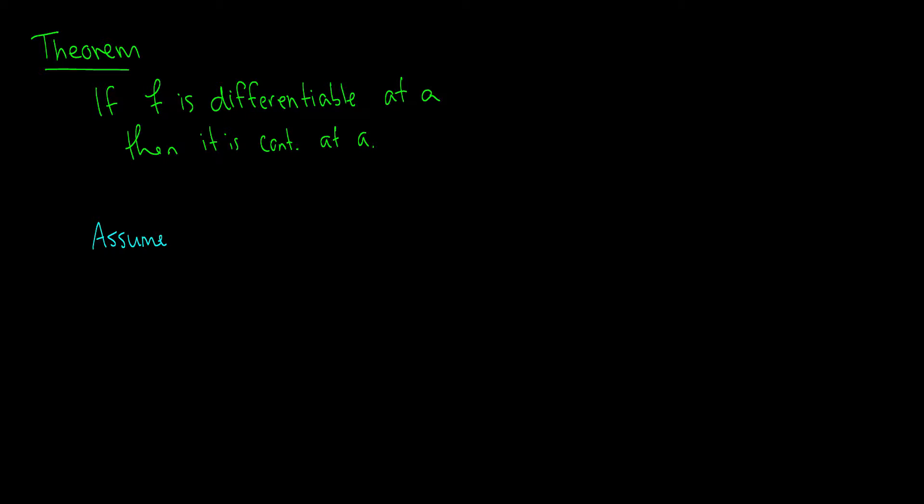That means that f prime at a point a is equal to the limit as x approaches a of f of x minus f of a over x minus a. So this is our definition of the derivative from a previous video. So we know this is true. We know this is absolutely 100% true.